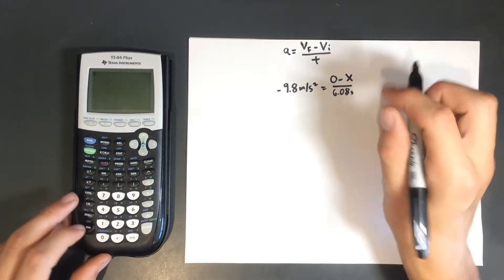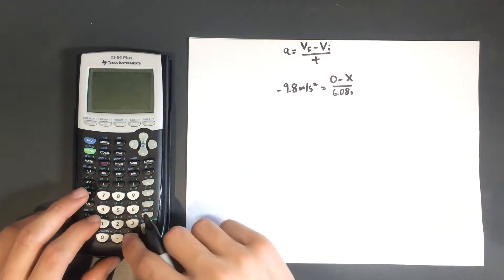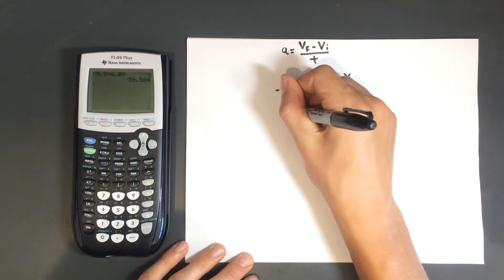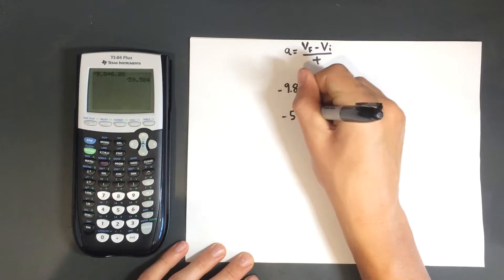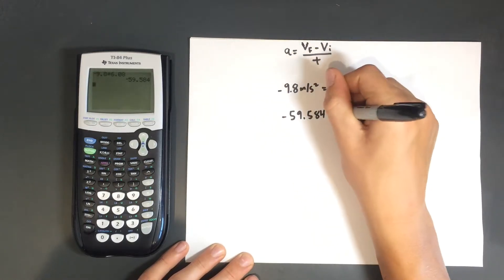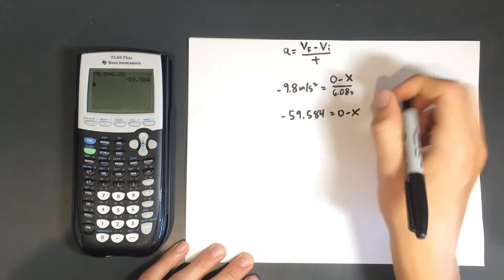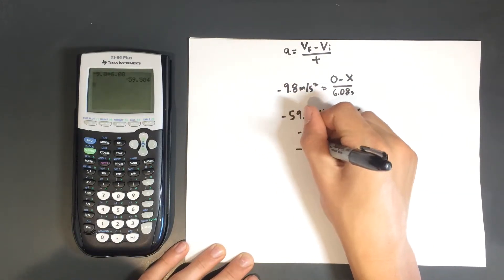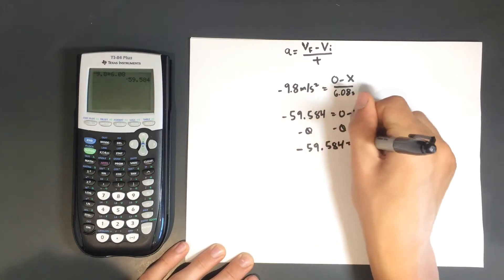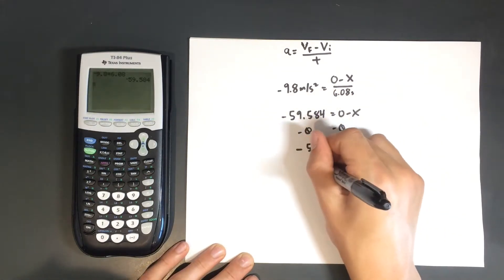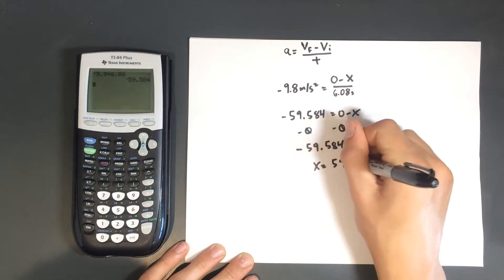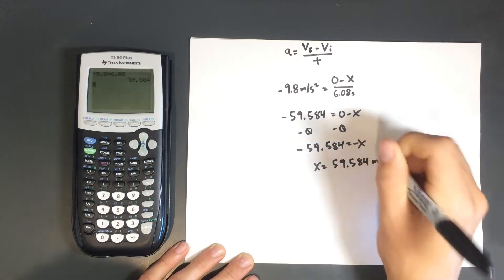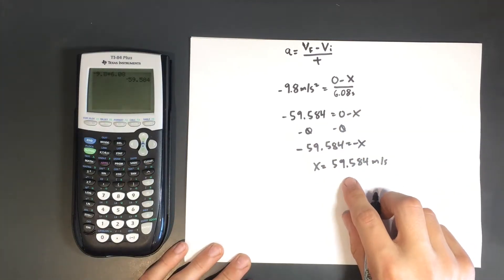From here we can simply solve it. Multiplying both sides by 6.08, we get negative 59.584, which equals 0 minus x. Subtracting 0 from both sides gives us negative 59.584 equals negative x. Therefore, x equals 59.584 meters per second, representing our initial velocity.